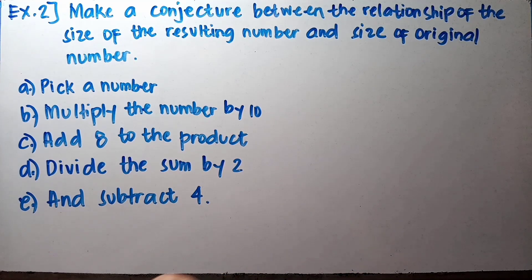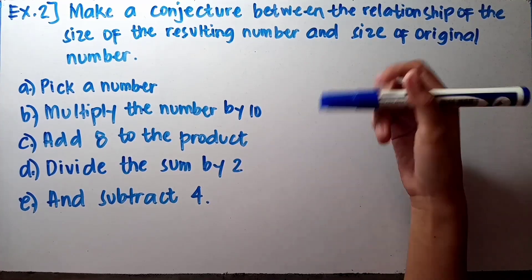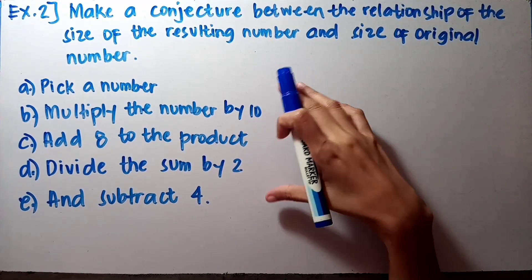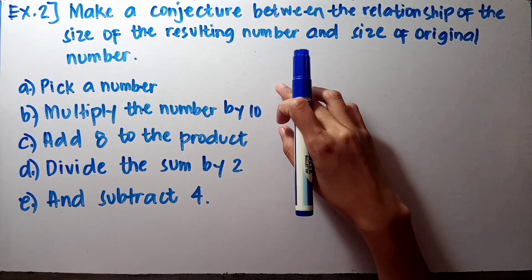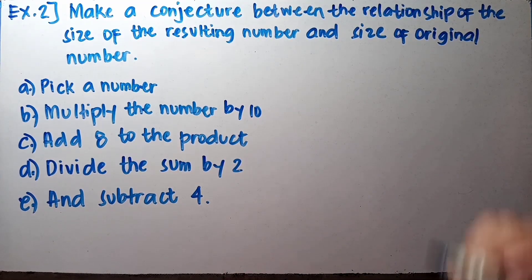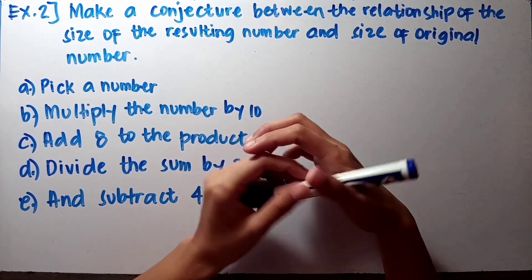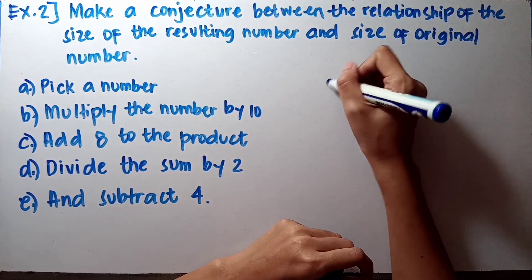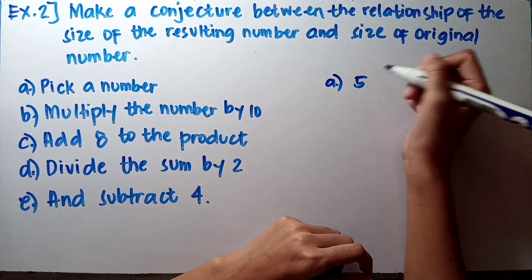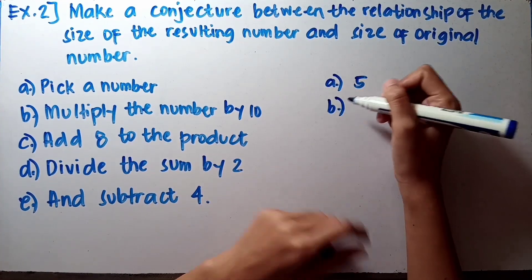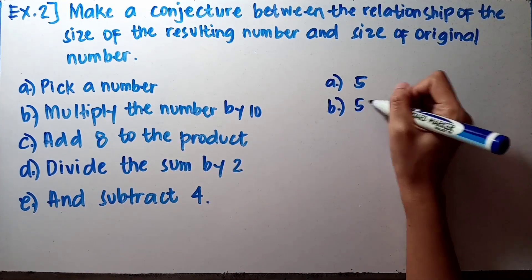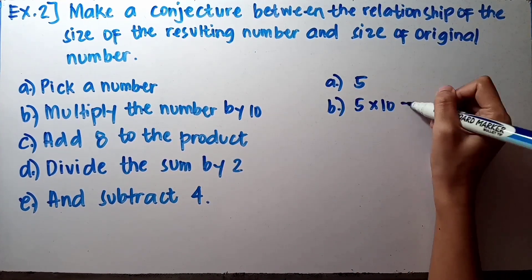For example number 2, we need to make a conjecture about the relationship between the size of the resulting number and the size of the original number. We will use inductive reasoning to come up with a conclusion about a given procedure. For letter A, pick a number — suppose we pick number 5 as the original number.